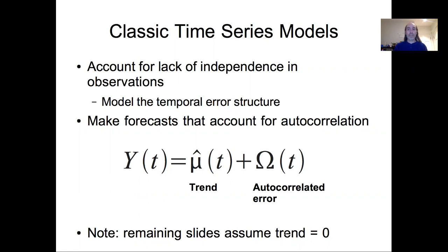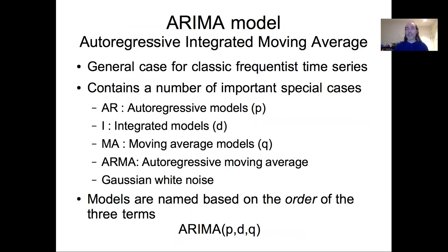The remaining slides are going to assume that the trend has already been removed, up until the point where I start talking about adding trend back in explicitly. So we're initially assuming the trend has been removed and we're trying to deal with autocorrelated error on detrended data. To do this, I'm going to introduce the ARIMA class of models — the autoregressive integrated moving average framework — which is really core to classical time series analysis. It's a very general framework for frequentist time series analysis, and can also be implemented in a Bayesian context. I'll go through the important special cases and build back up to the full case.